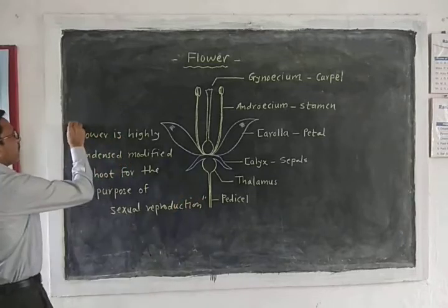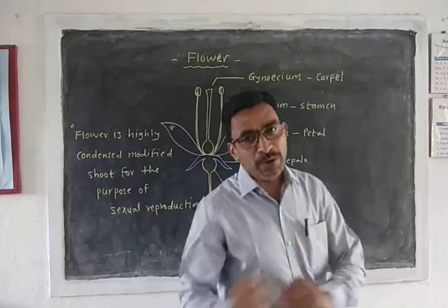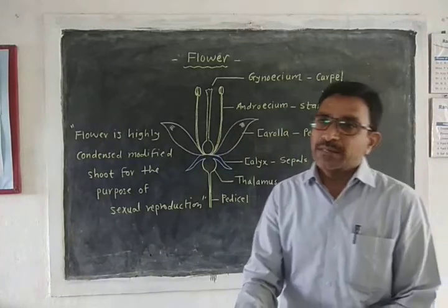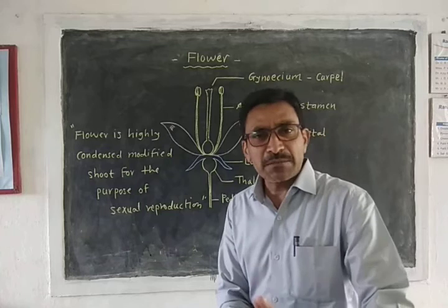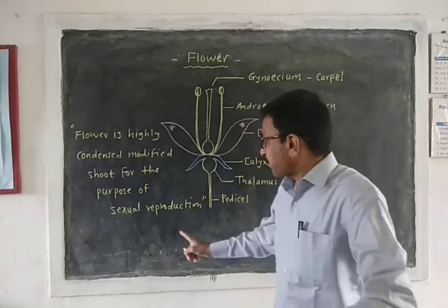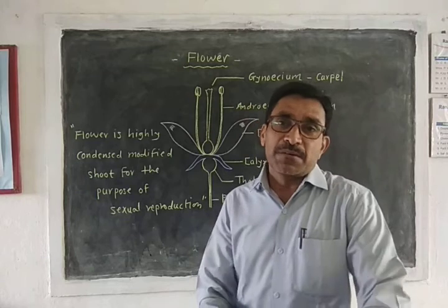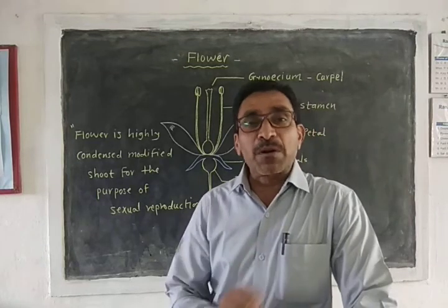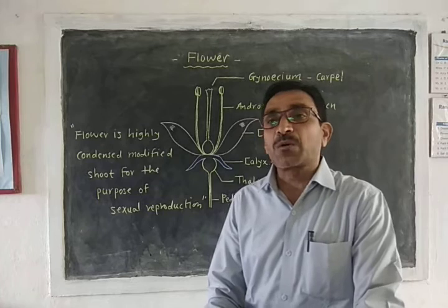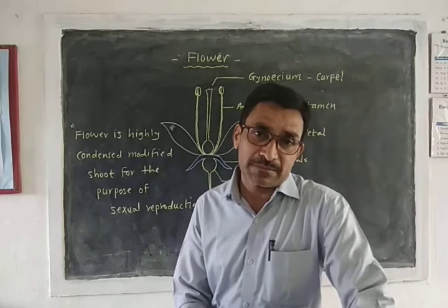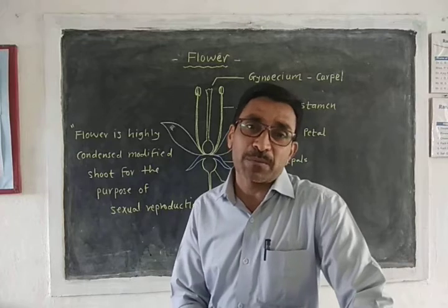Flower is a highly condensed and modified shoot, and this modification is for the purpose of sexual reproduction. Floral morphology is also called reproductive morphology. There are two types of morphology: vegetative morphology and reproductive morphology.